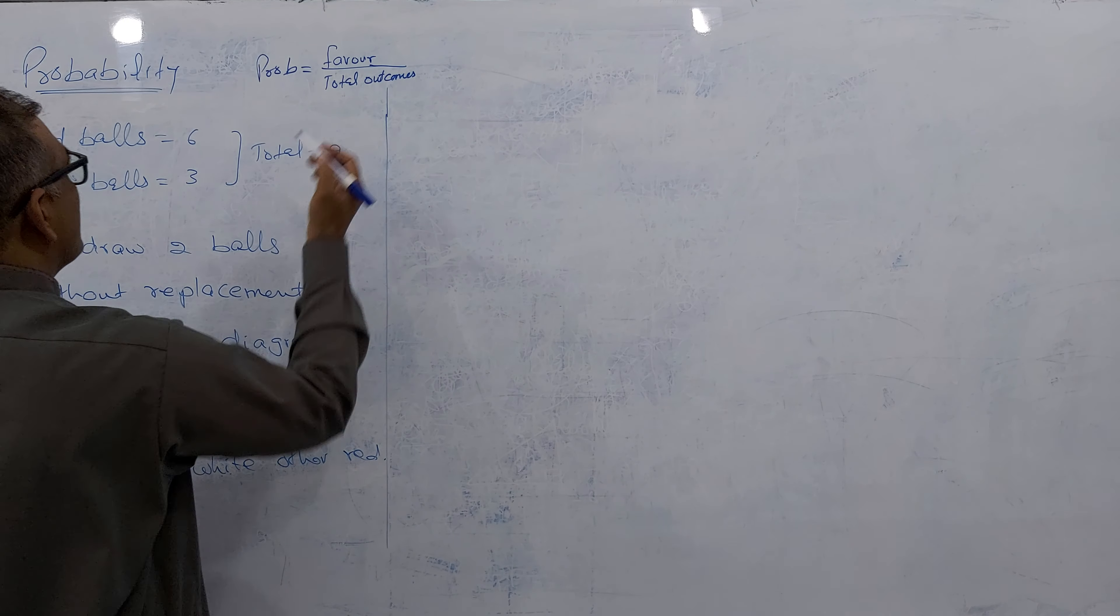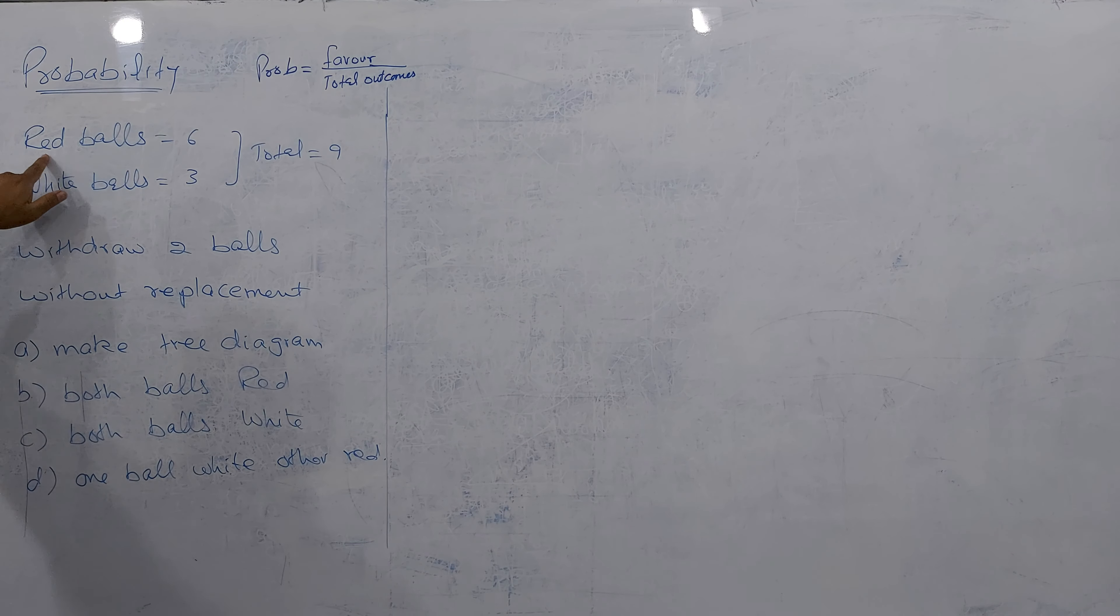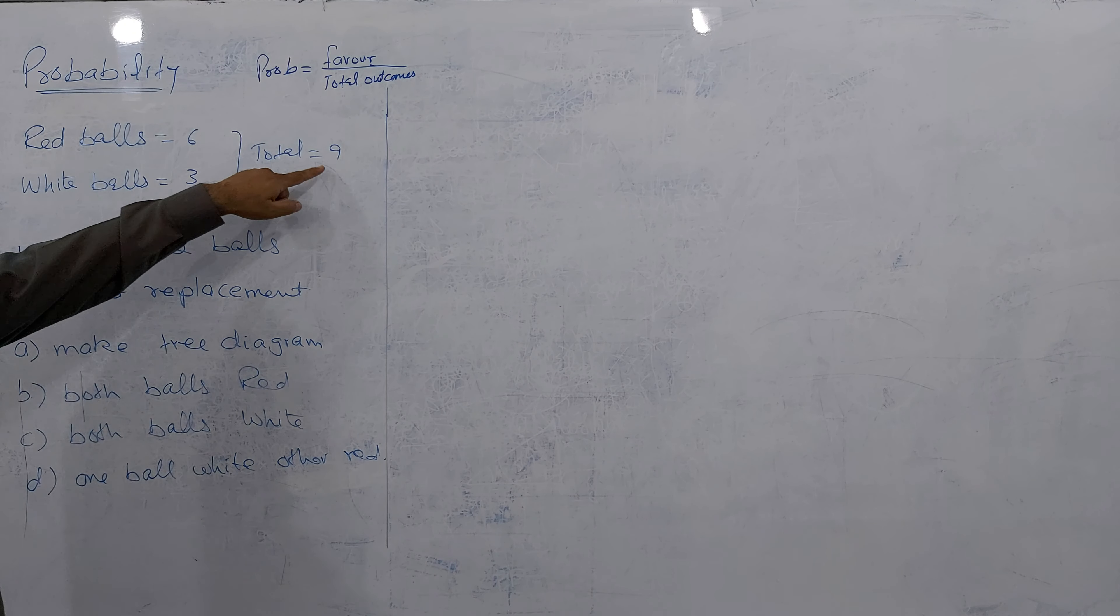Favorite up, total down. Let's talk about red balls are 6 and white balls are 3, total 6 plus 3 is 9. We draw two balls without replacement.